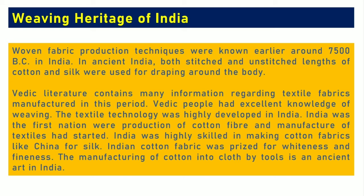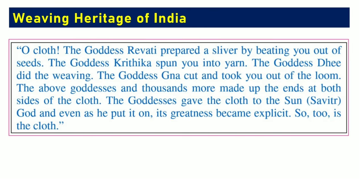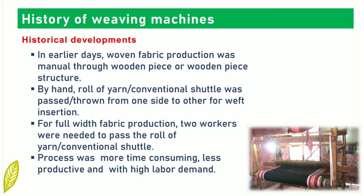India was highly skilled in making cotton fabrics like china for silk. Indian cotton fabric was prized for its whiteness and fineness. The manufacturing of cotton into cloth by tools is an ancient art in India. A reference from Vedic literature gives a clear idea about the spinning and weaving knowledge of ancient people. With these basics, let's start the historical developments of weaving machines.